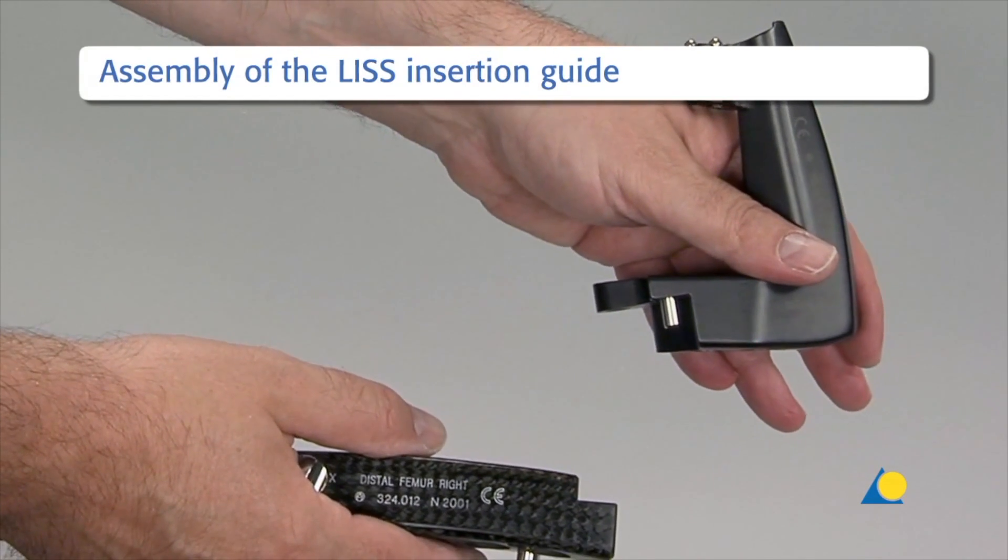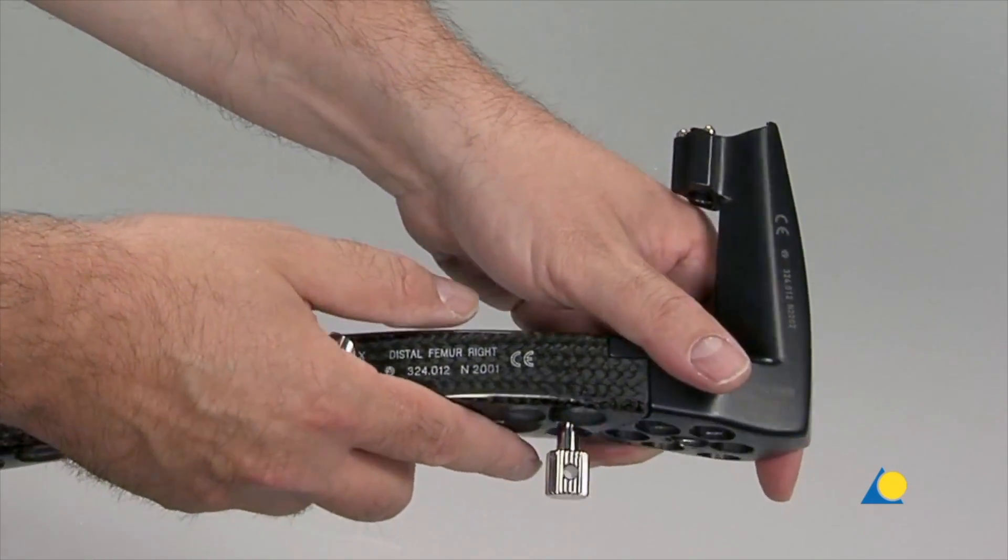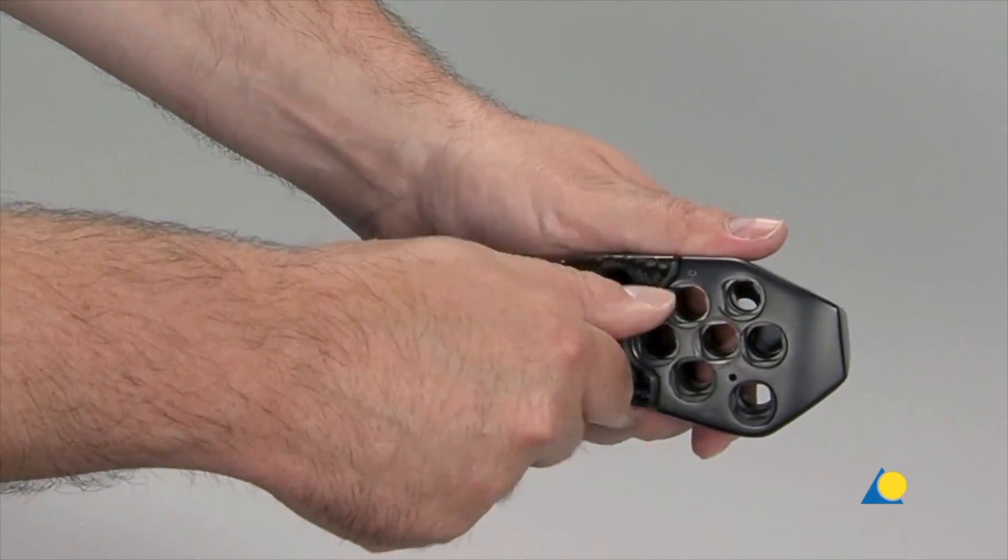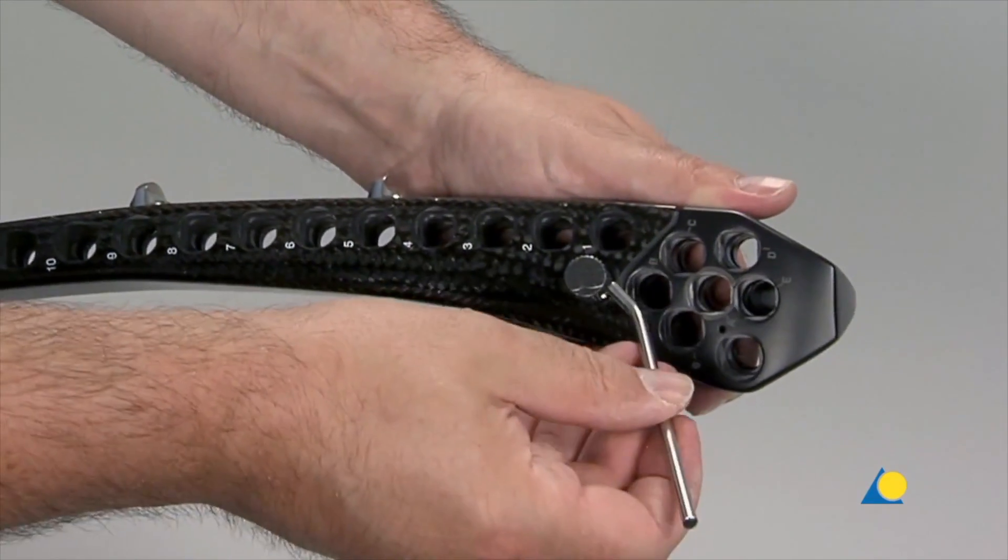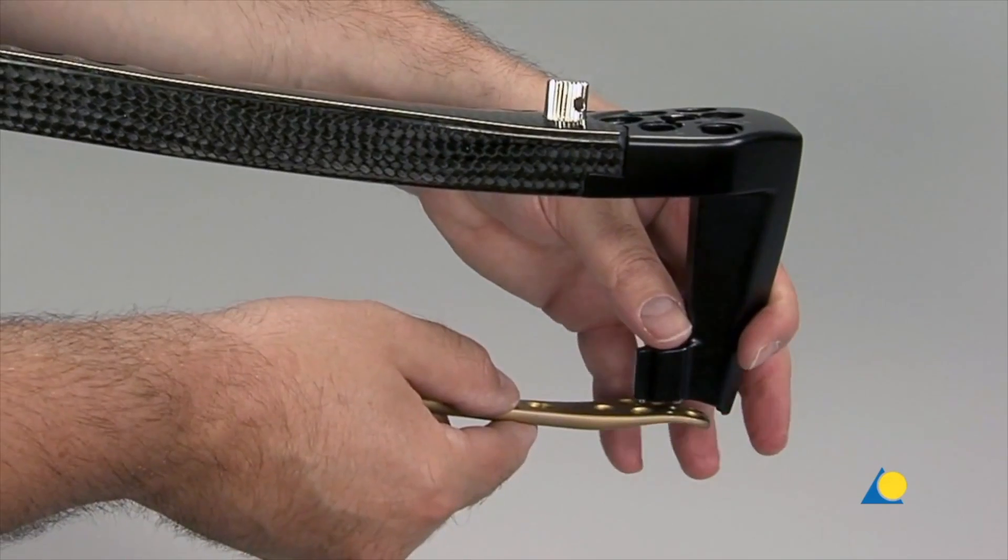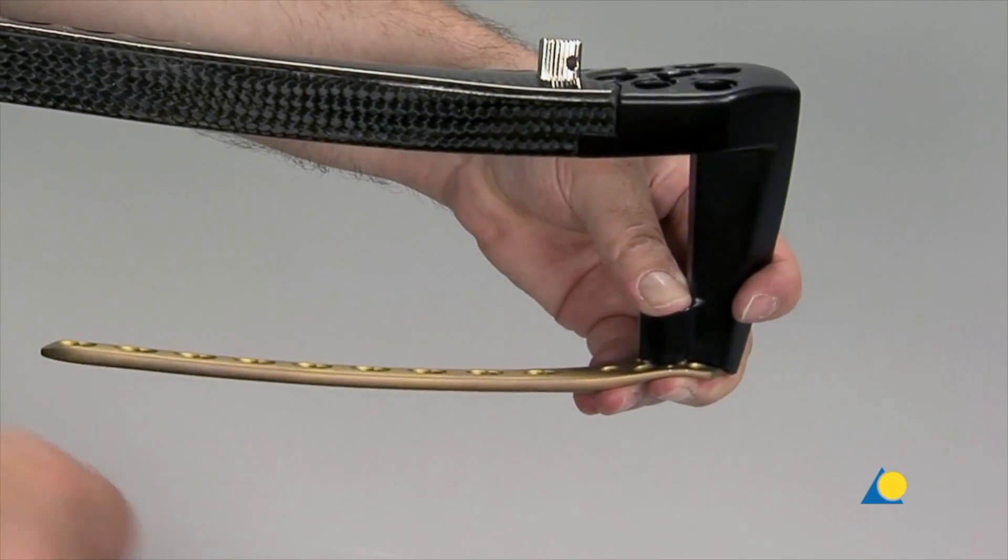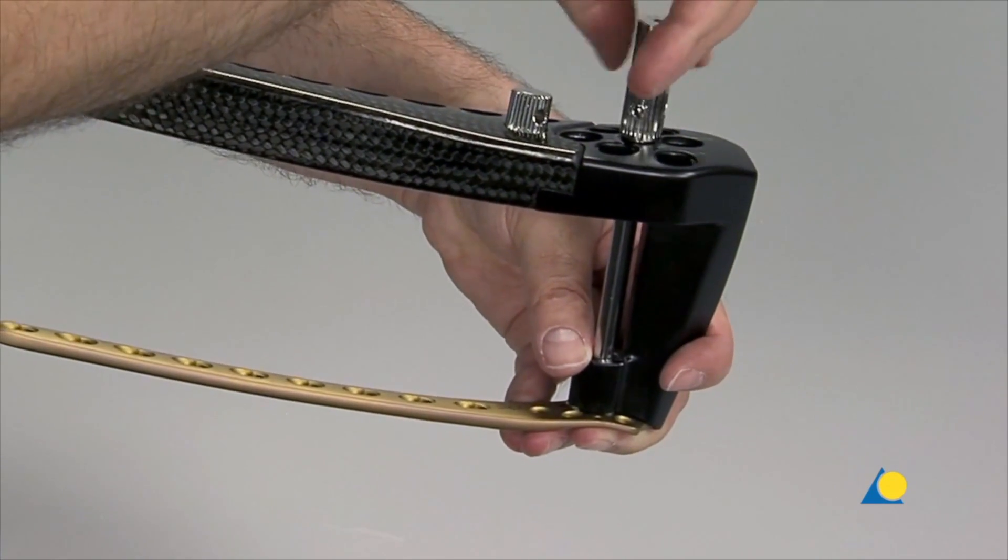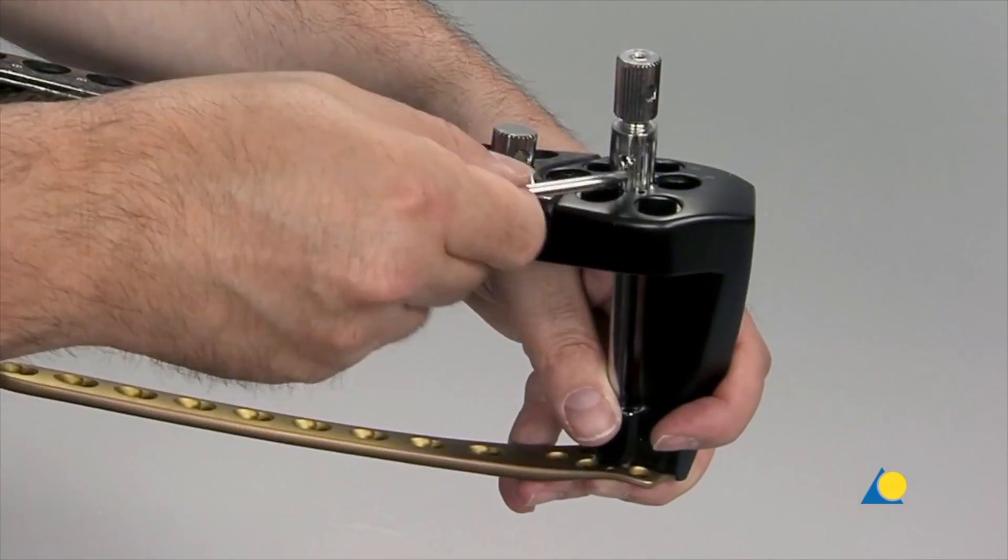The main component and the radiolucent extension of the distal femur LIS insertion guide are assembled. The nut on the extension is tightened, first by hand, and then with the pin wrench. The insertion guide is fitted onto the distal end of the LCP-DF plate by means of a three-point fastening. The fixation bolt is passed through the central hole, A, of the insertion guide, down to the plate. The connection is stabilized by tightening the nut of the fixation bolt, first by hand and then with the pin wrench.